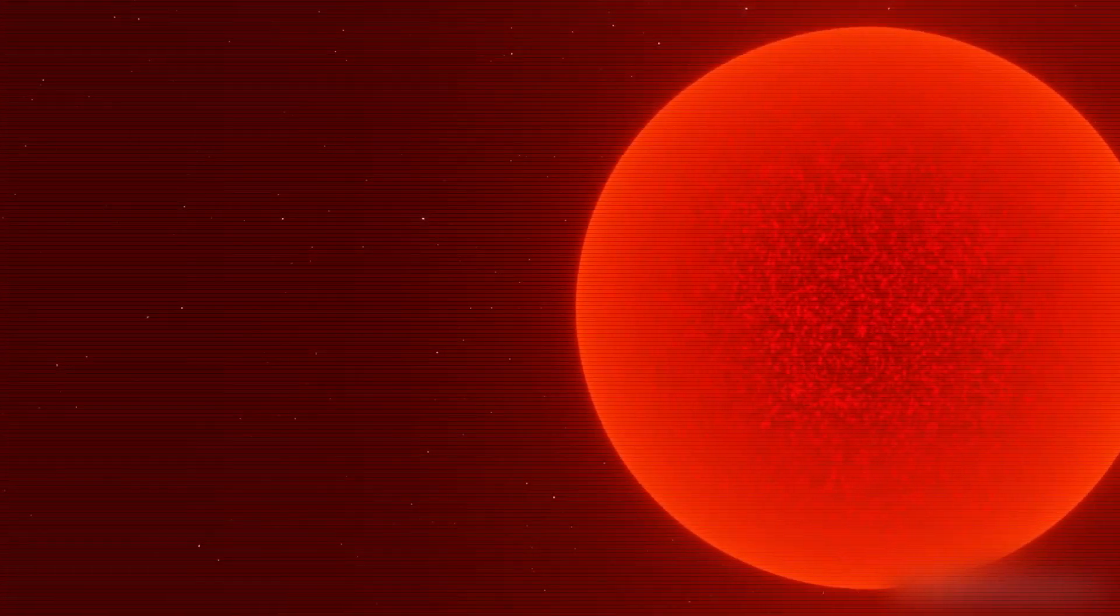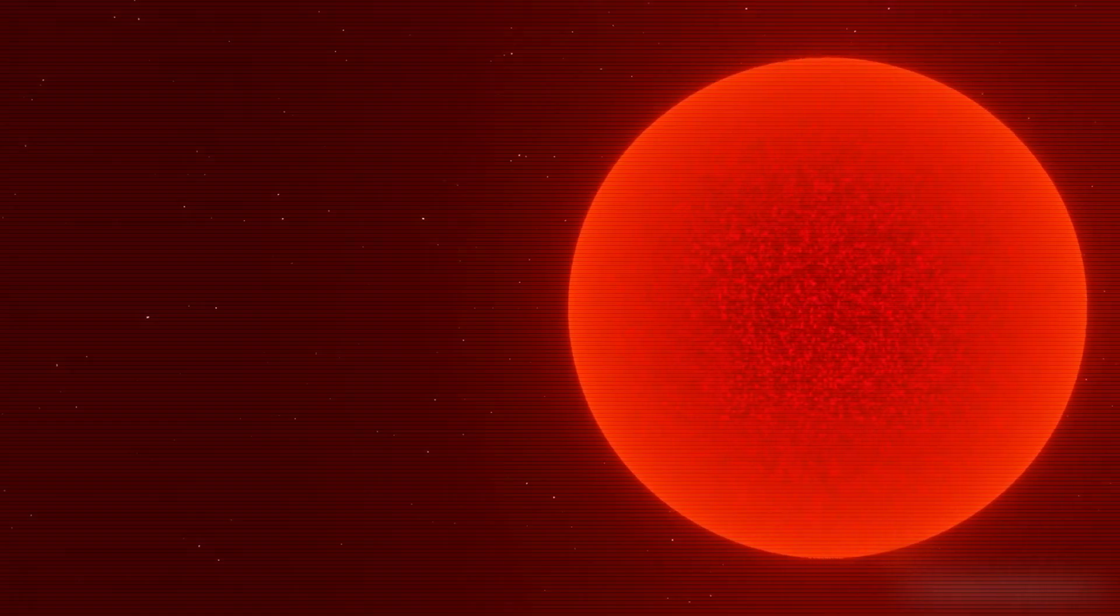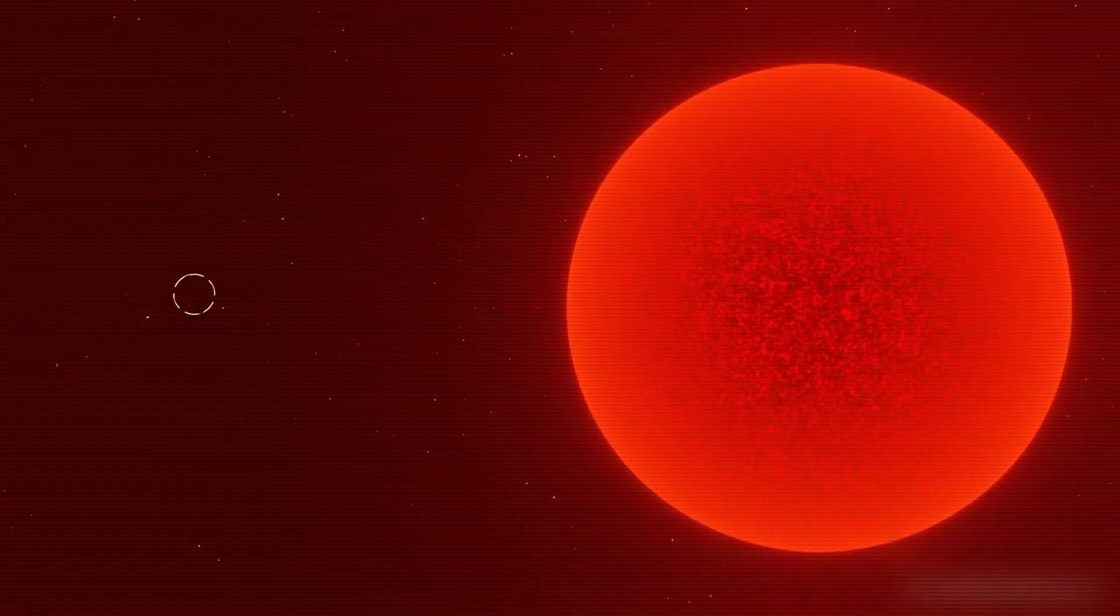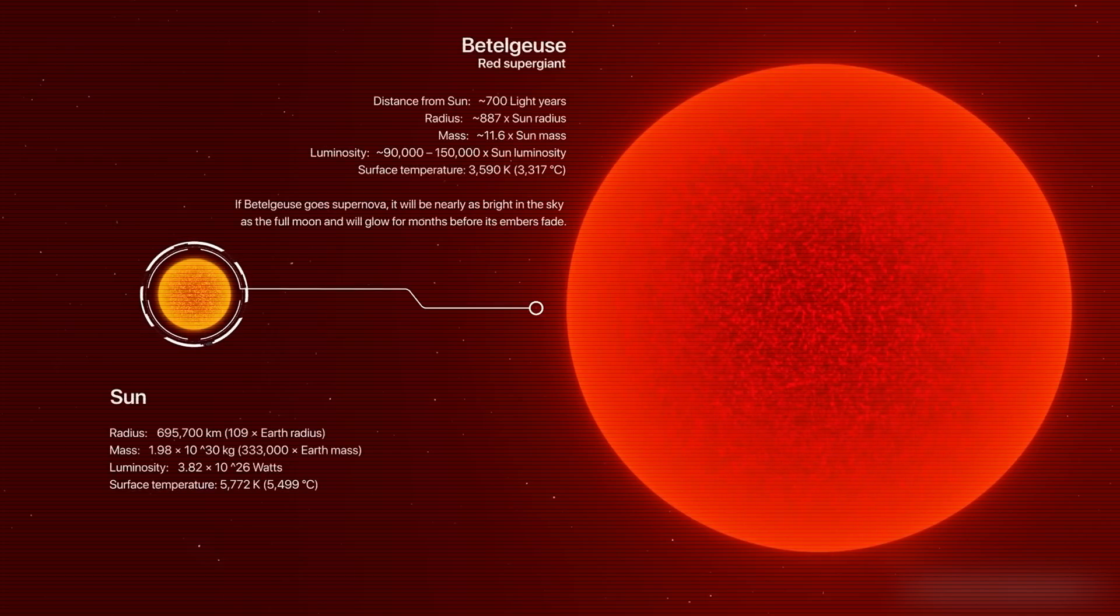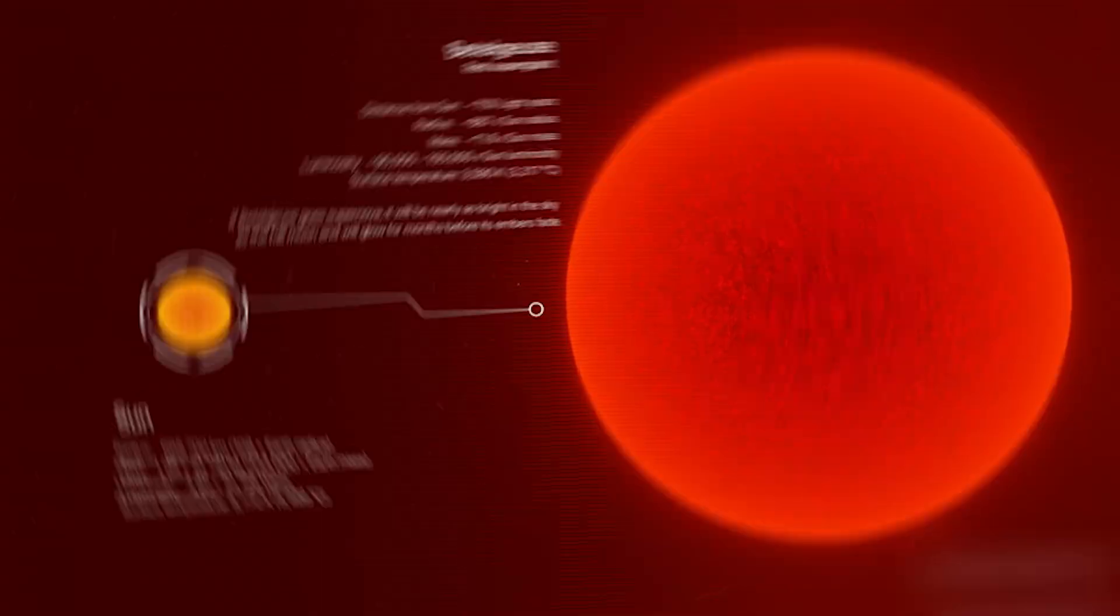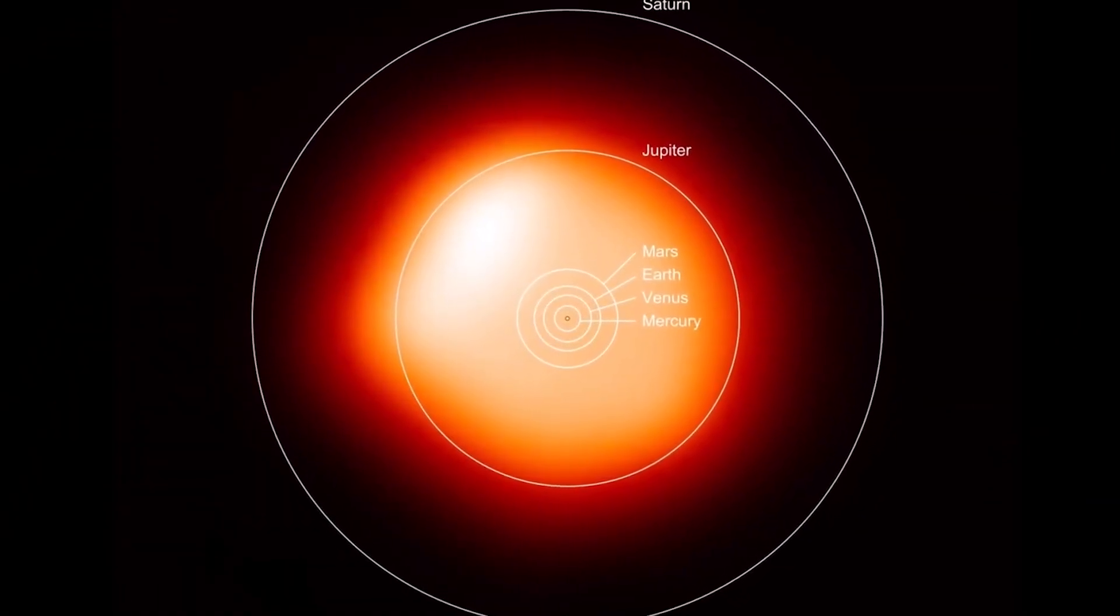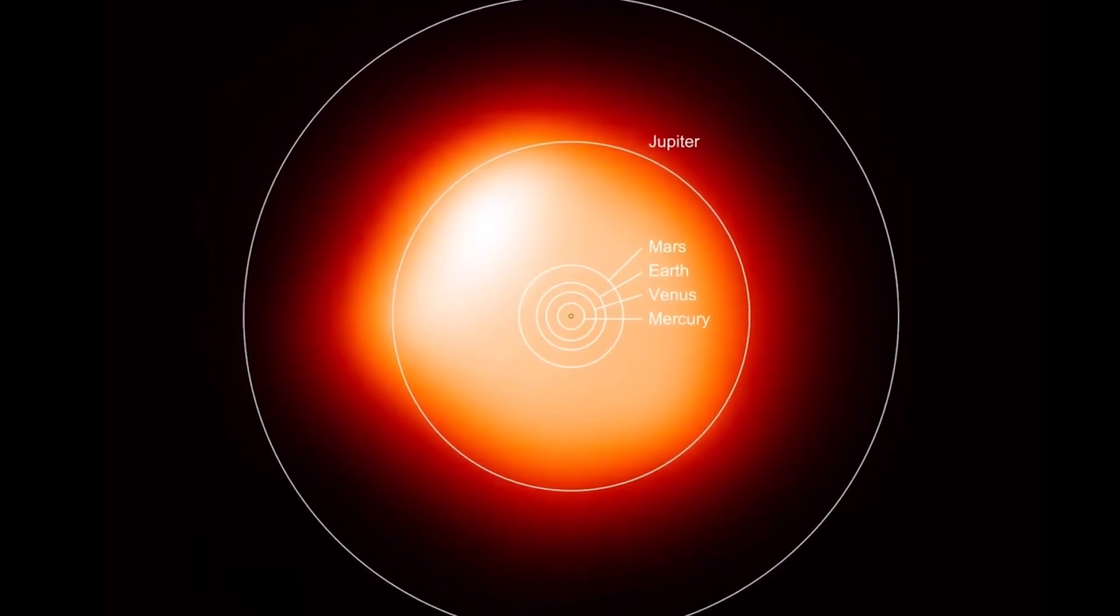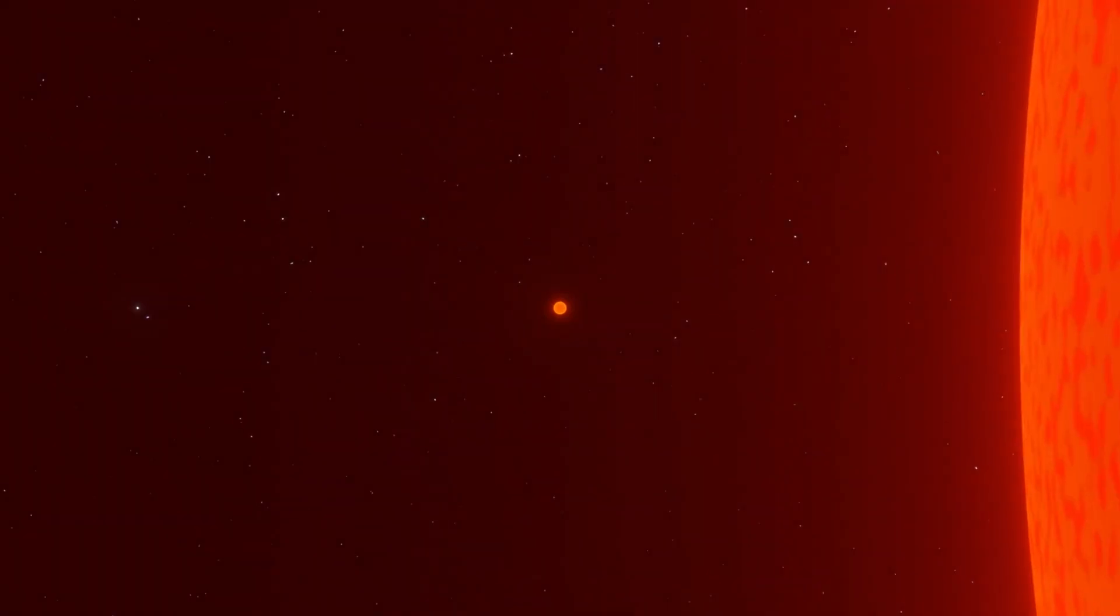Betelgeuse's notoriety isn't just due to its impending supernova status. As a red supergiant, it's one of the largest and most luminous stars known. Its diameter is about 1,400 times that of our sun. If it were placed at the sun's position, its outer layers would extend past the orbit of Jupiter.